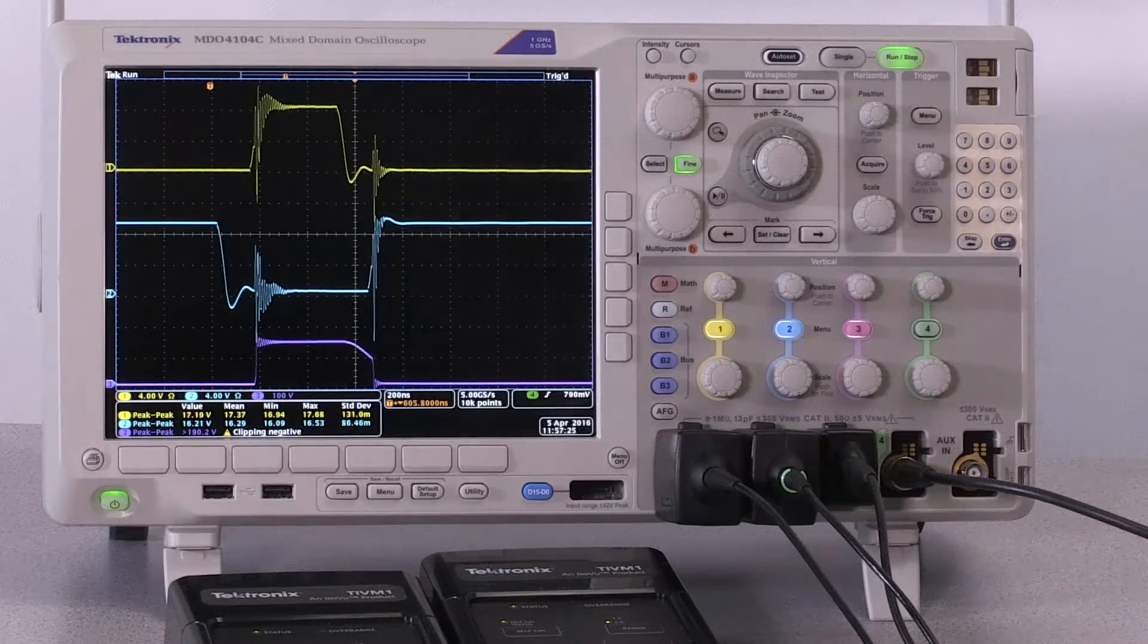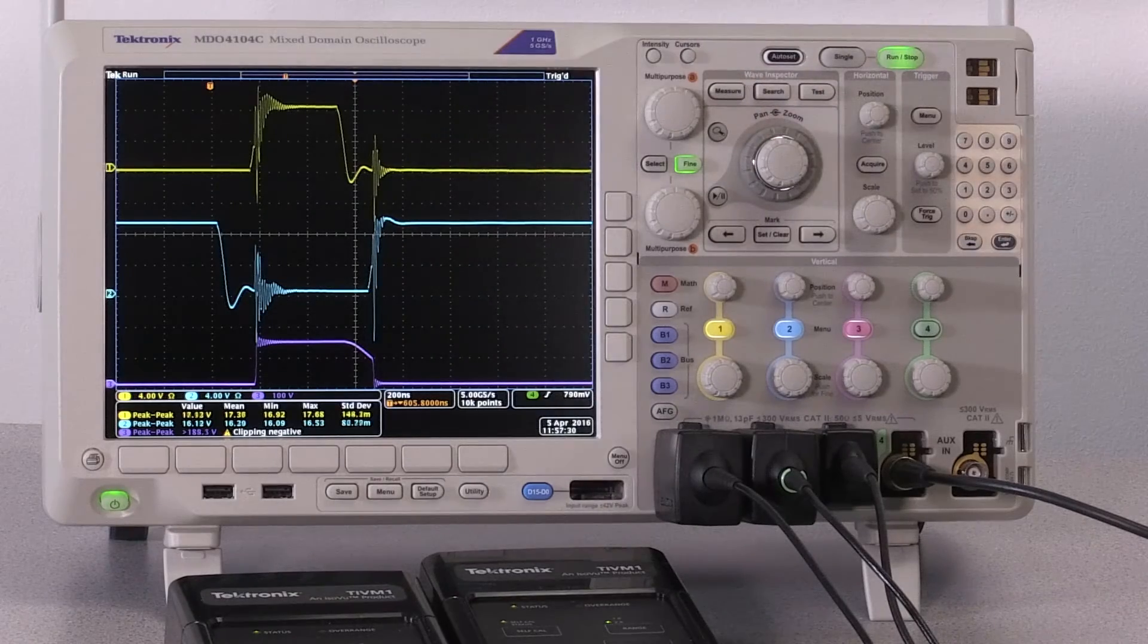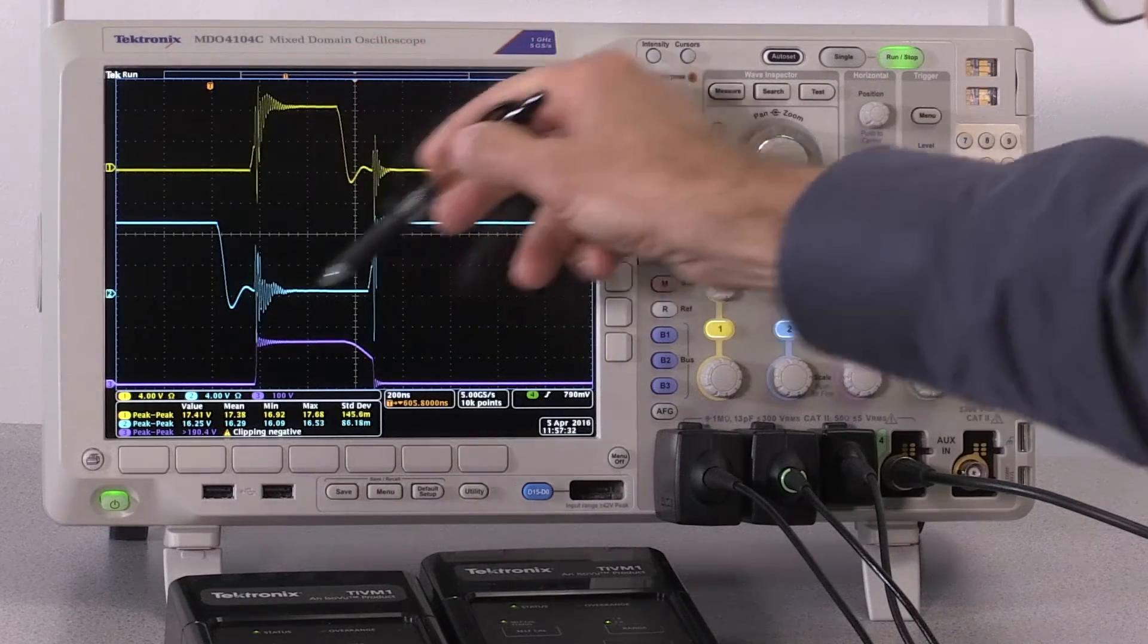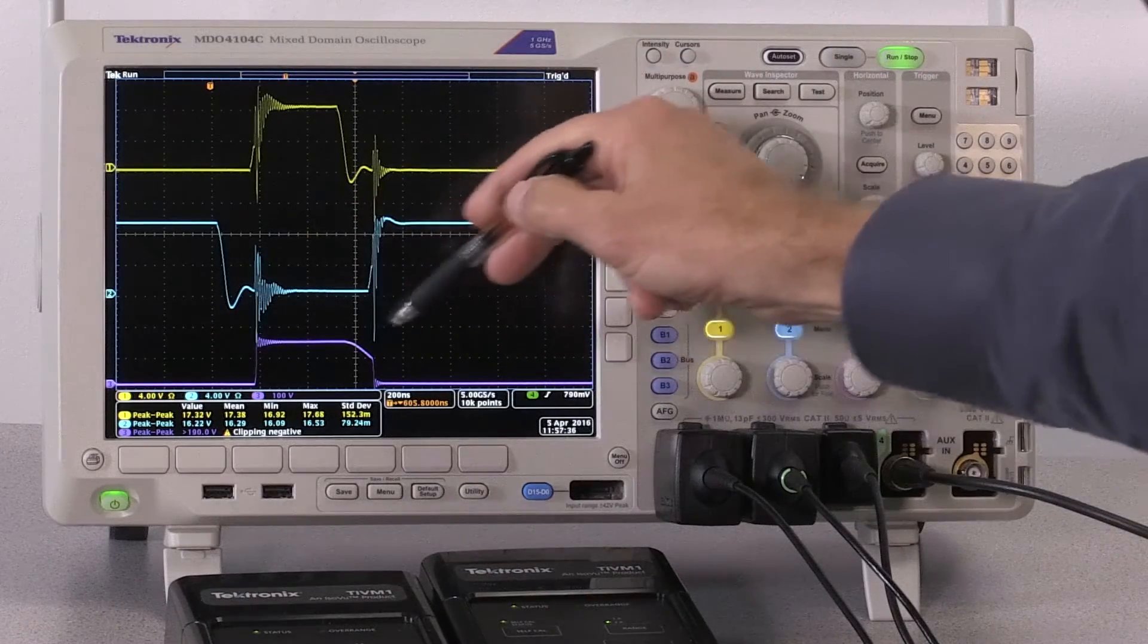So looking at the oscilloscope screen, we can see the high-side VGS voltage is the yellow trace here. The light blue trace is the low-side VGS, and the magenta trace is the switch node.